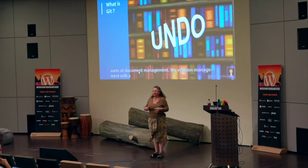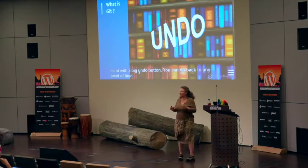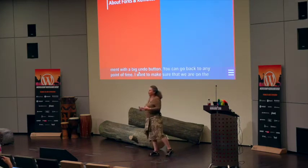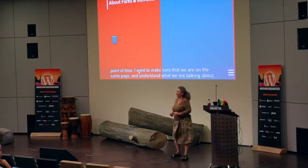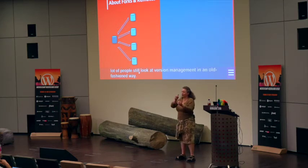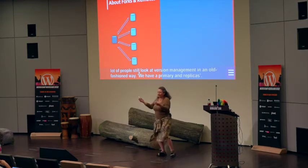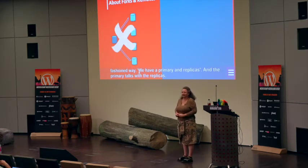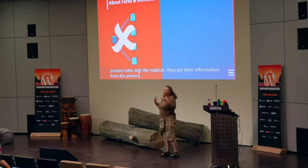Before we really dive in, I want to make sure we're all on the same page. A lot of people still look at Git or version management in an old-fashioned way. They look at it as: we have a primary, and then we have replicas. Those replicas talk with the primary, get their information from the primary, and give back to the primary. That is not Git. That is SVN, that is CVS, that is how we used to do things.